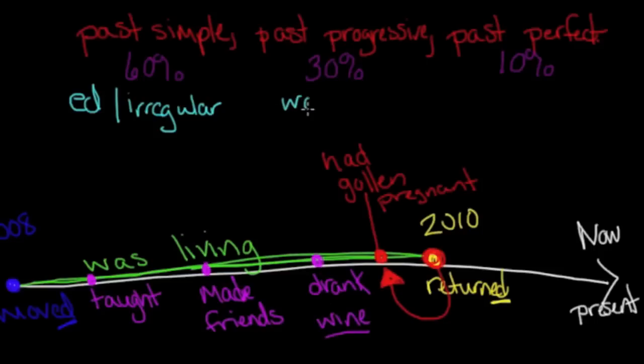Past progressive is was or were with your verb ending in an I-N-G. You have that I-N-G ending there. You can see was living.